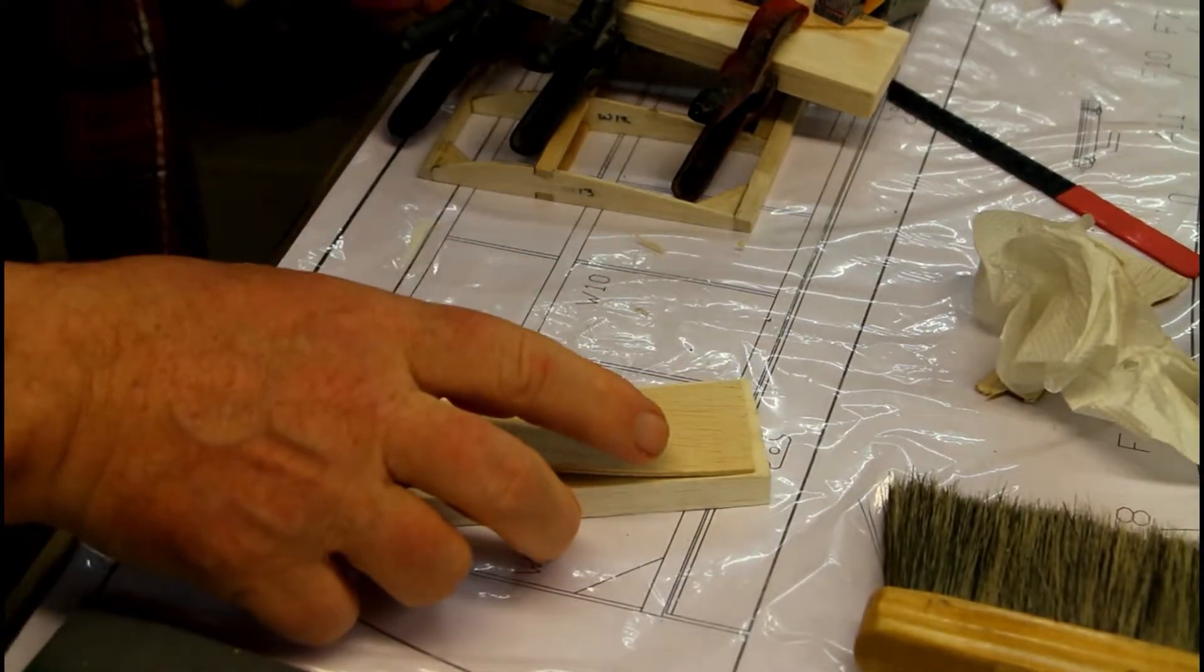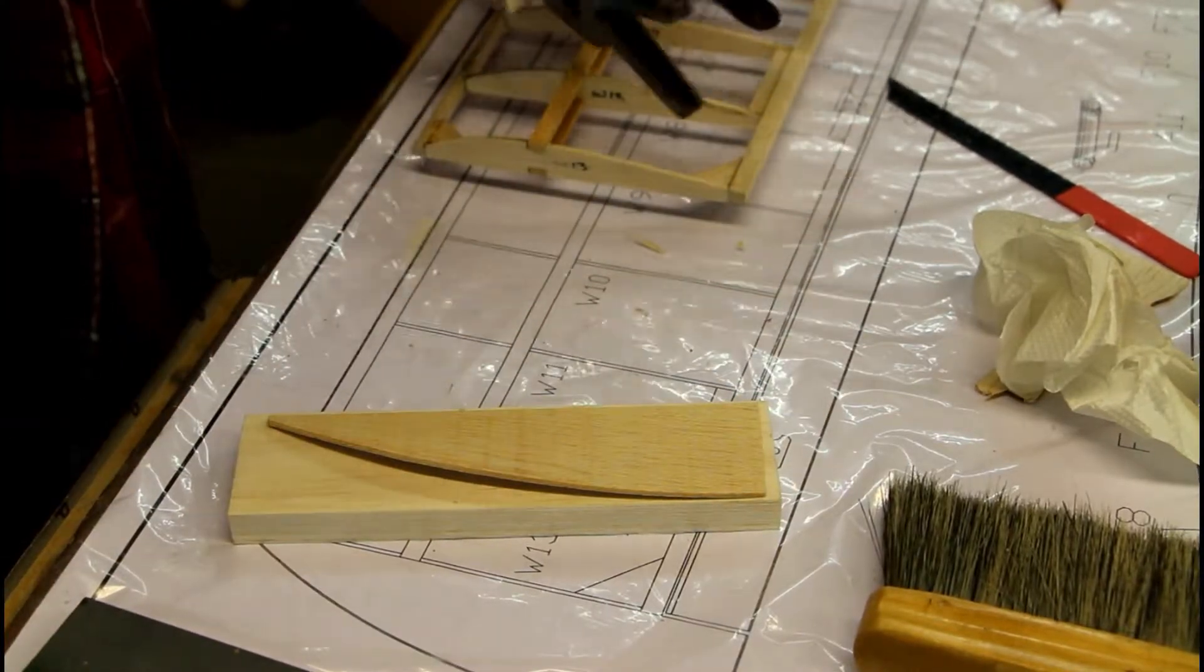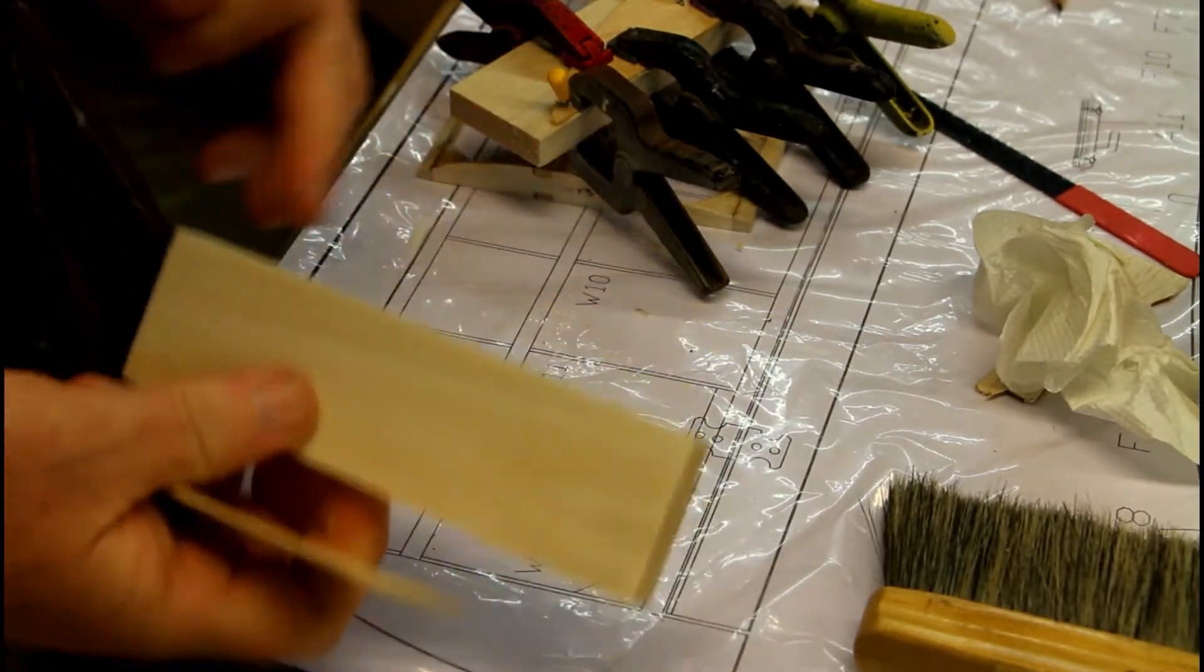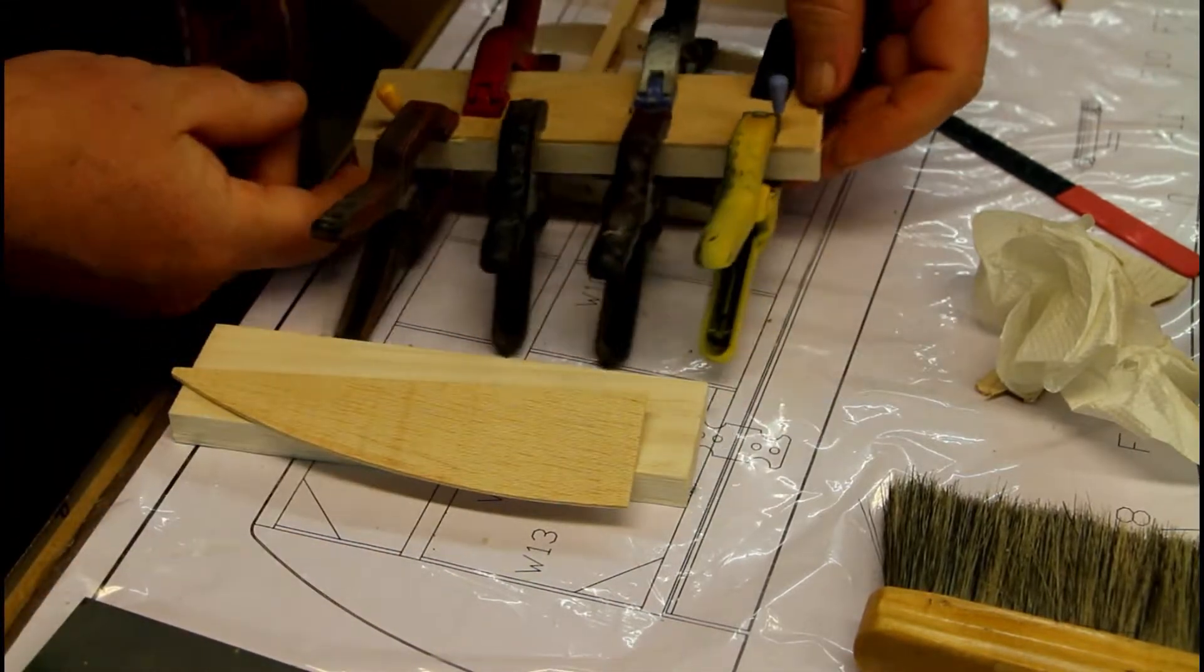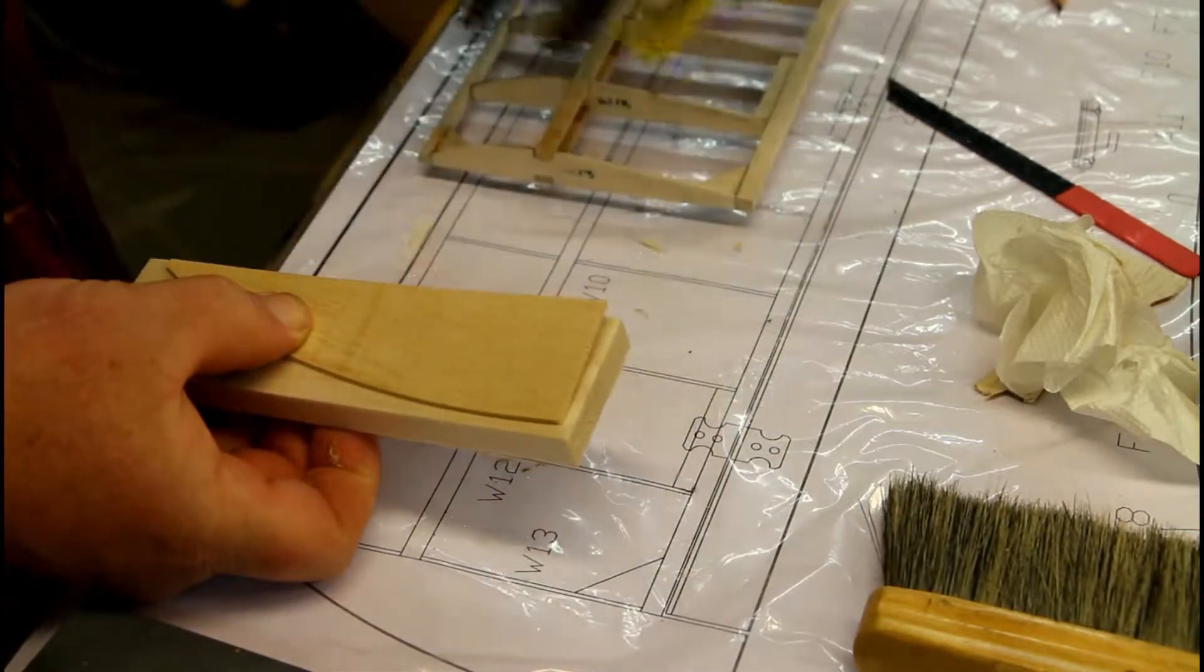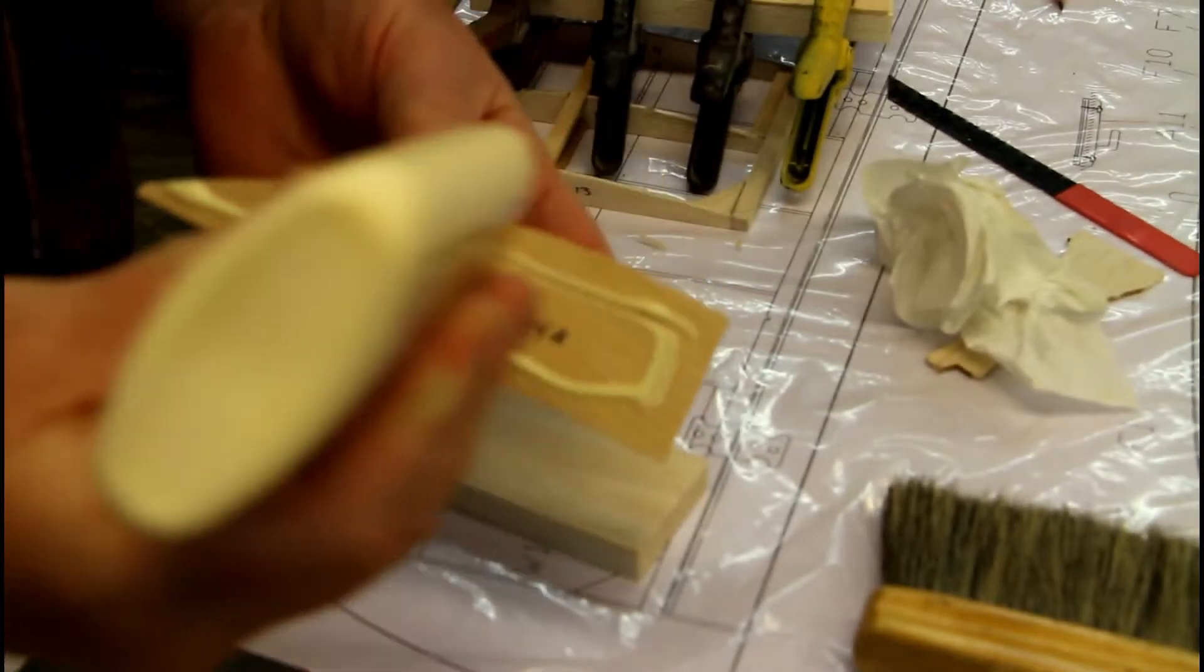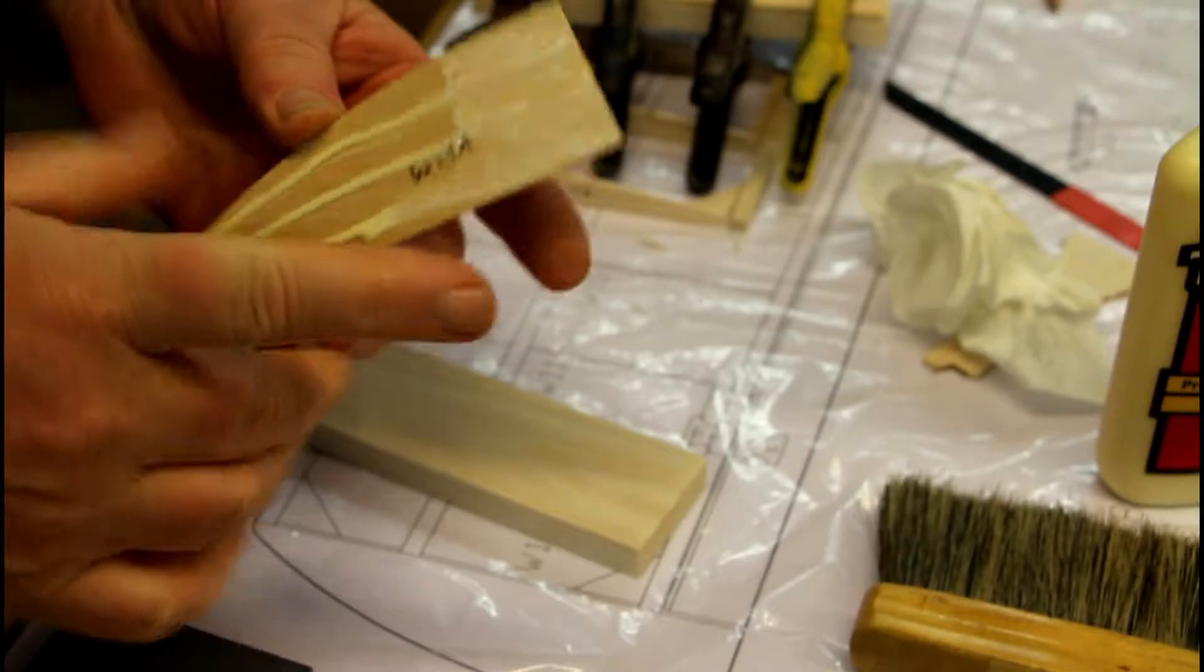Now the next step is to make up the wing tips. They are made from this light ply and a piece of balsa wood and the only thing that you have to be careful about when doing this is to make one left and one right. I've already done one here, this is the left one, now I just have to make the right one and just glue the plywood down to the balsa wood.